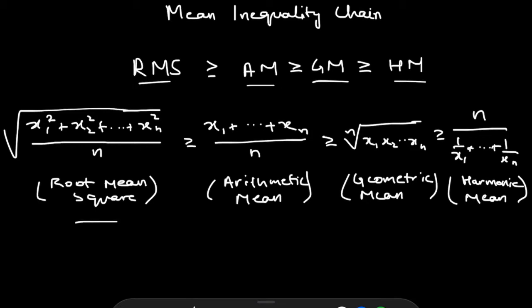To define these terms: the root mean square is the square root of the arithmetic mean of the squares of n numbers — the square root of (x₁² + x₂² + … + xₙ²) / n. This is always greater than or equal to the arithmetic mean, which is just the average of n numbers. That is always greater than or equal to the geometric mean, which is the nth root of the product of the n numbers. And the geometric mean is always greater than or equal to the harmonic mean, which is the reciprocal of the average of n reciprocals.